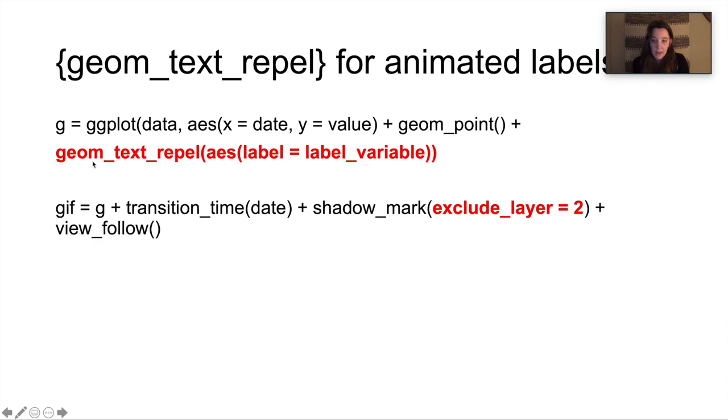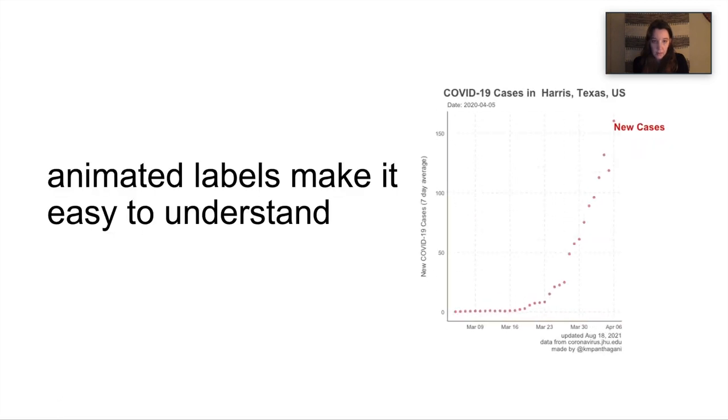So to do that, what we can do is add an animated label and do that with geom_text_repel. We add it to our ggplot and we tell it what label we want. In this case, I'm using a variable from my data frame as the label. You can also just put a string in here. And then we still animate it. One thing you have to do is your shadow_mark, you have to exclude layer two. In this case, layer two is this geom_text_repel layer of your ggplot. Otherwise, your plot will just be entirely full of labels and it'll look horrible.